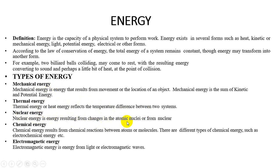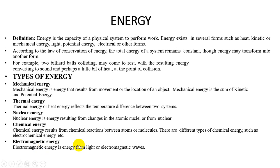Nuclear energy results from changes in the atomic nuclei — nuclear fission or fusion. In the previous topic we studied about various types of power stations, including nuclear power stations, where nuclear fusion or fission produces a large amount of energy. Then chemical energy comes from atoms or molecules and electrochemical combinations. Electromagnetic energy is also a type of energy — for example, the mobile devices we use operate using electromagnetic waves.